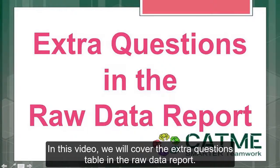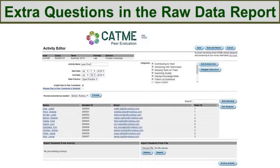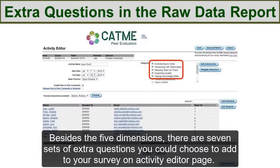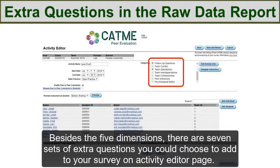In this video, we'll cover the extra questions table in the raw data report. Besides the five dimensions, there are seven sets of extra questions you could choose to add to your survey on Activity Editor page.